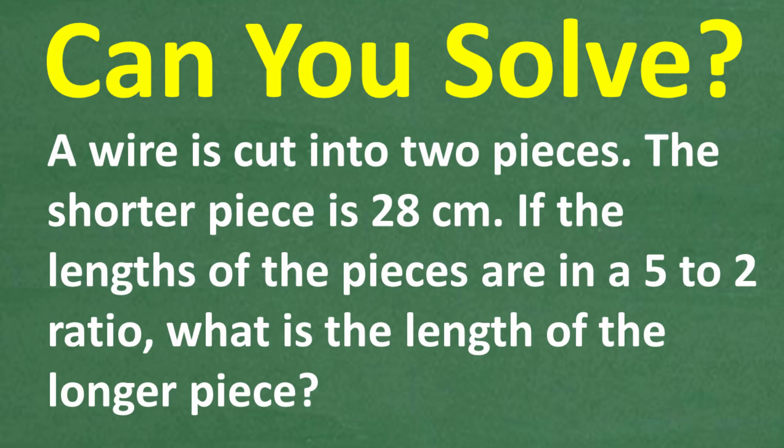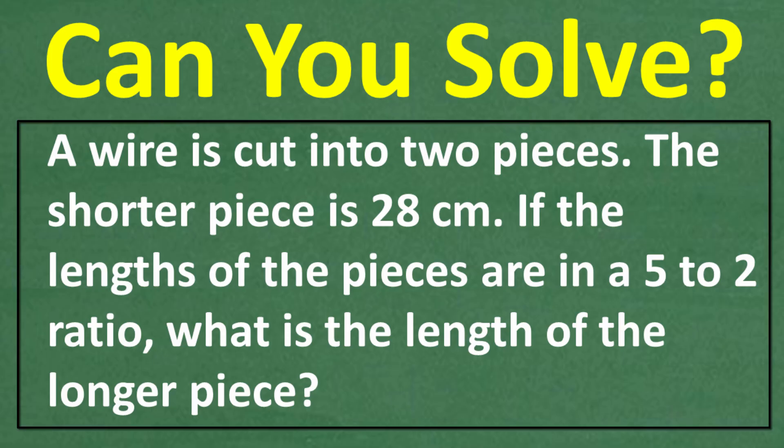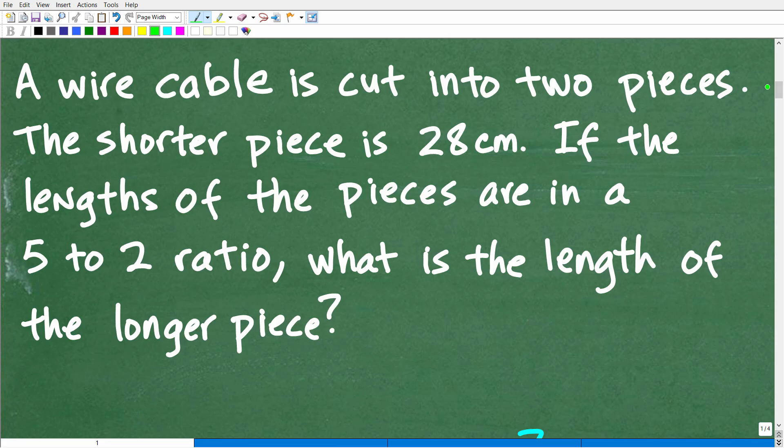Okay, so let's go to just take one more look at this question. A wire cable is cut in two pieces. The shorter piece is 28 centimeters. If the lengths of the pieces are in a 5 to 2 ratio, what is the length of the longer piece? I've already read the problem a couple of times. So hopefully you understand what's going on.